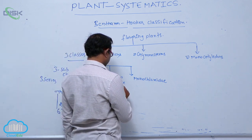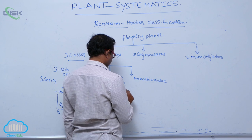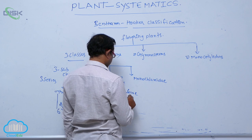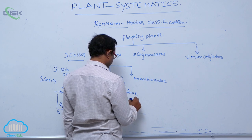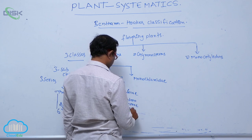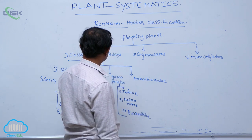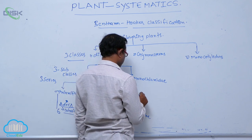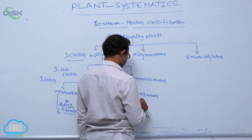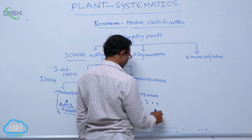Gamopetalae is again divided into three series. The first one is Inferae, the second one is Heteromerae, and the third one is Bicarpellatae. Inferae has three cohorts, and Heteromerae has three cohorts.